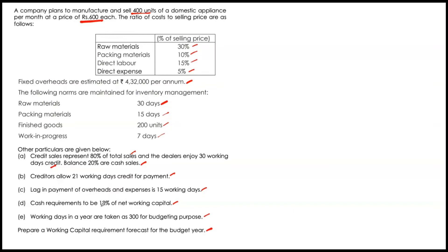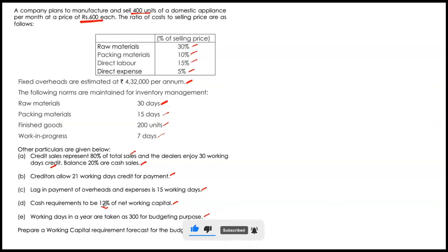We will then know what cash is required and arrive at total working capital required. But for all of this, we need certain fundamental information. Selling price is given as 600, and using that we can arrive at debtors. But raw material cost is not given directly — it is expressed as a percentage of selling price. For valuing work in progress and finished goods, we need further information like total cost.